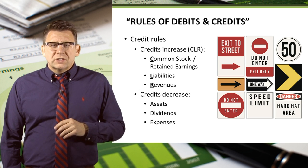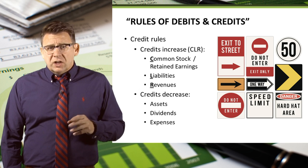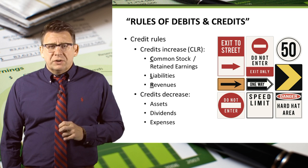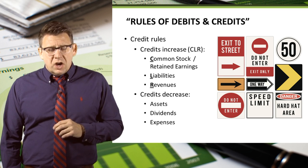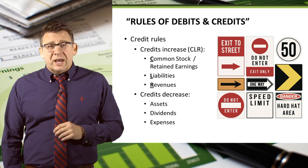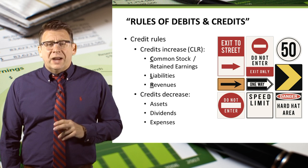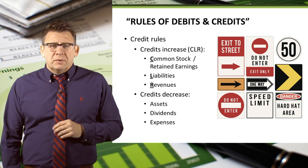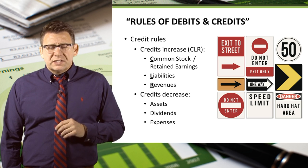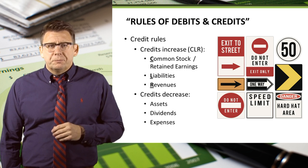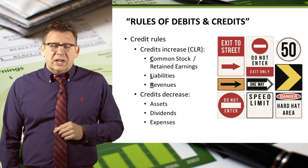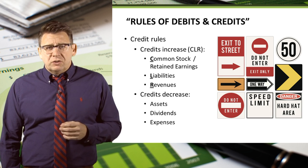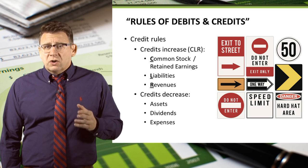The credit rules are as follows: common stock and retained earnings, liabilities, and revenues are increased by credits. I remember this with the acronym CLEAR — credits increase CLEAR. The normal balance of common stock and retained earnings, liabilities, and revenues are credit balances.